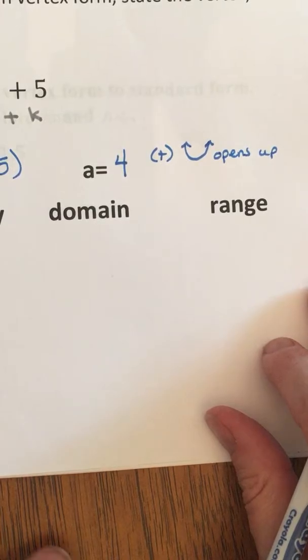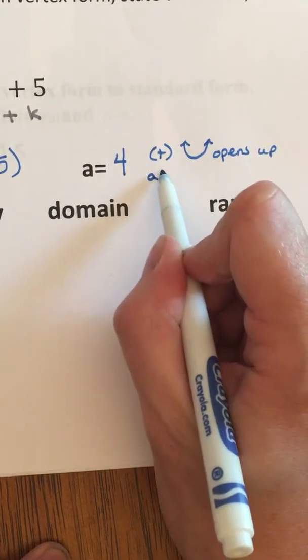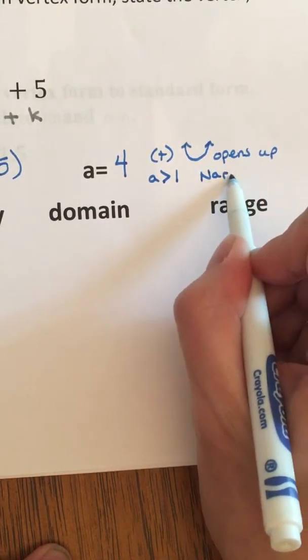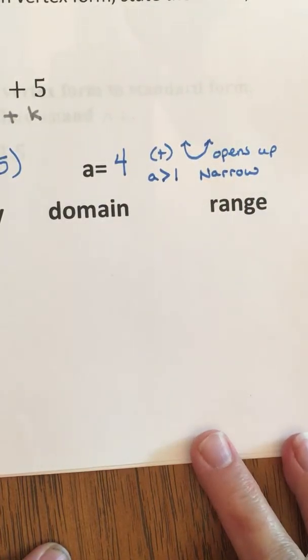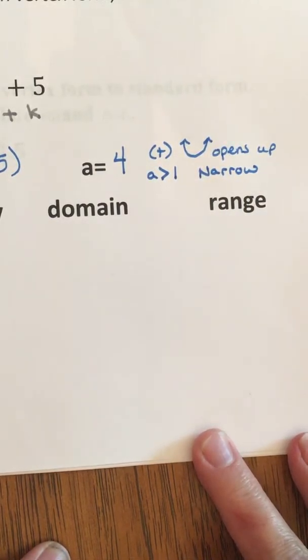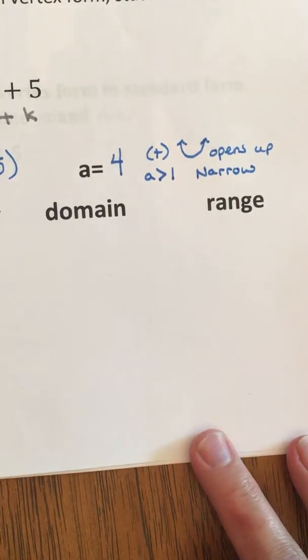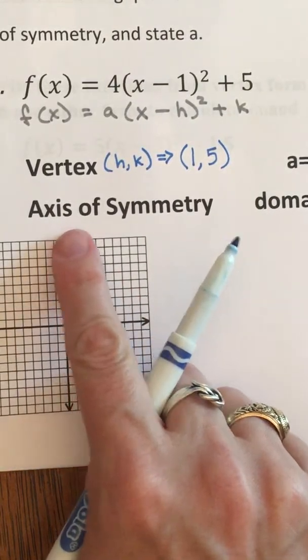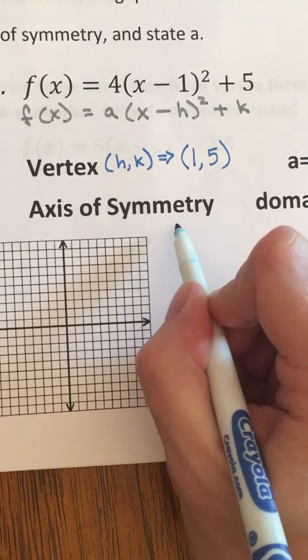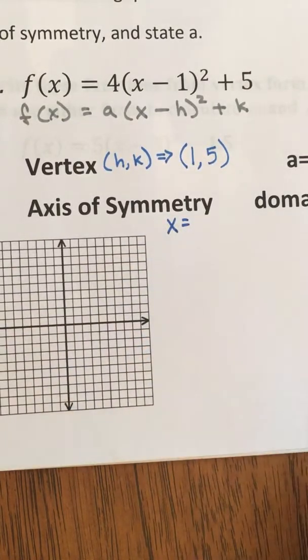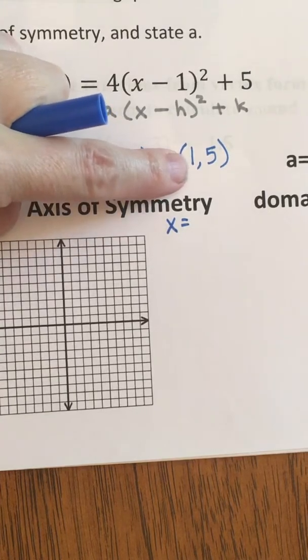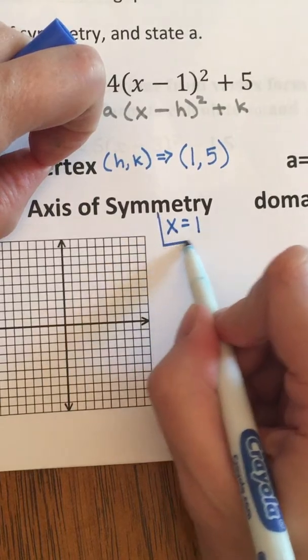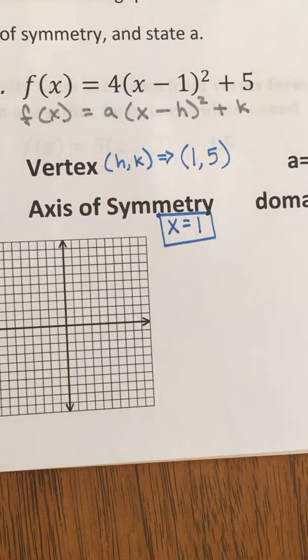I also happen to know that when A is larger than 1, my parabola will be very narrow. And 4 is definitely larger than 1. This will be very narrow. The next thing we see is a need for the axis of symmetry. The axis of symmetry is always an equation. X equals some number. What number? That one. So whatever H is, done. Wasn't that easy? Super easy.